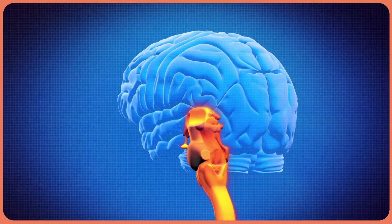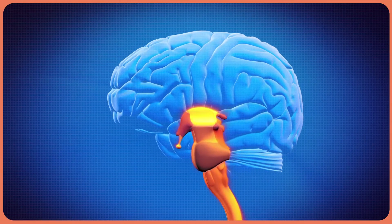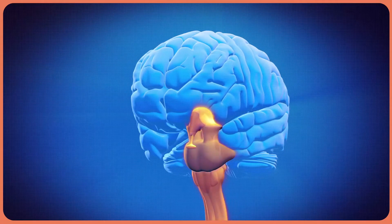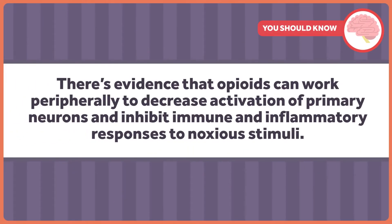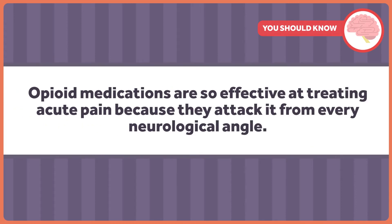Those descending pathways have fibers that either amplify or inhibit pain signals being sent to the brain. Opioid compounds suppress the fibers amplifying the signal and enhance the fibers that inhibit the signal. There's even evidence that opioids can work peripherally to decrease activation of primary neurons and inhibit immune and inflammatory responses to noxious stimuli. Opioid medications are so effective at treating acute pain because they attack it from every neurological angle.